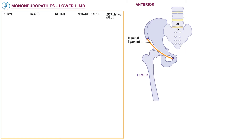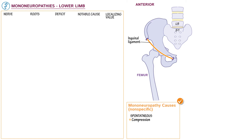Now list the following nonspecific causes of mononeuropathies in the lower extremity. Spontaneous causes include compression, nerve entrapment, trauma, and hematoma or abscess. Note that often these things are not entirely spontaneous, as iatrogenic causes can certainly lead to hematoma and abscess, compression, or trauma.